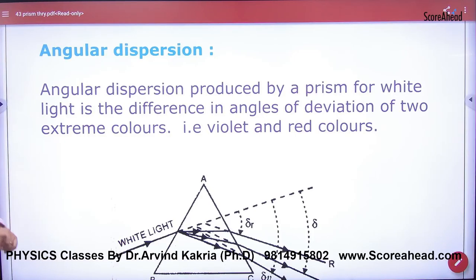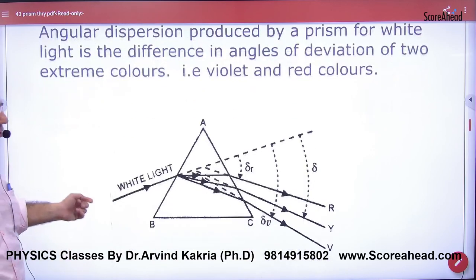What is angular dispersion? When white light enters the prism, then it deviates in 7 colors.